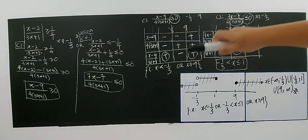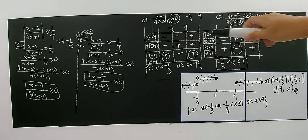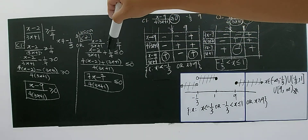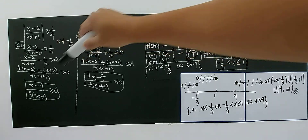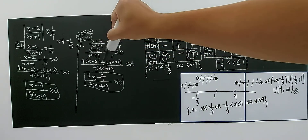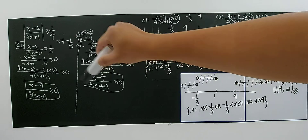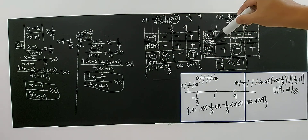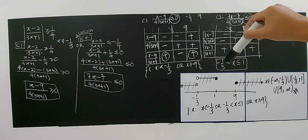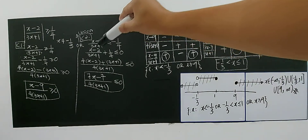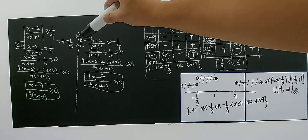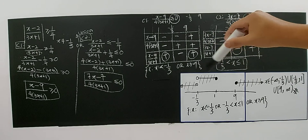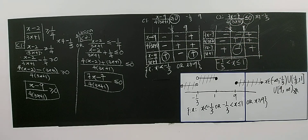Let's review the flow. First, apply the basic definition of absolute value to get two cases. Then solve each rational inequality separately using the table of signs. Finally, combine the two solutions using a number line — taking a union since the original operation was 'or'. This is your final solution.